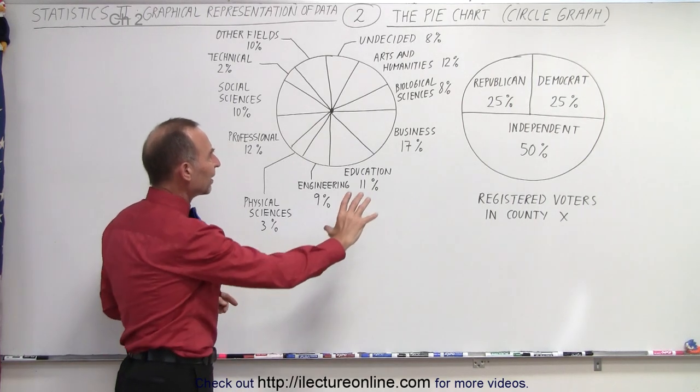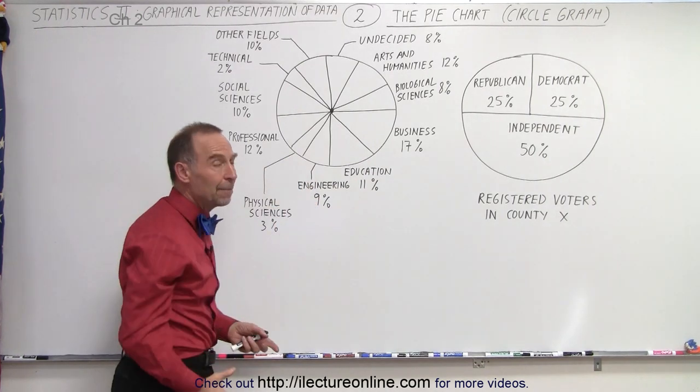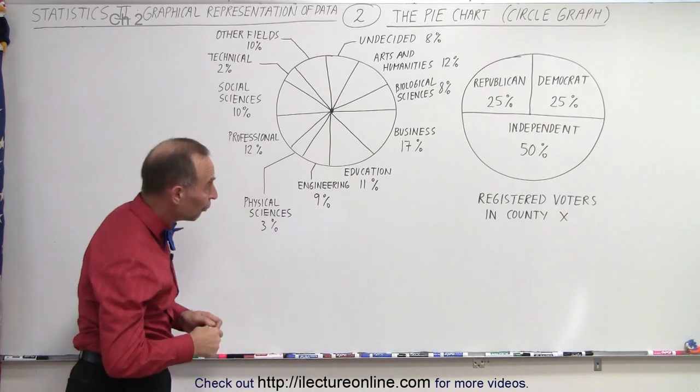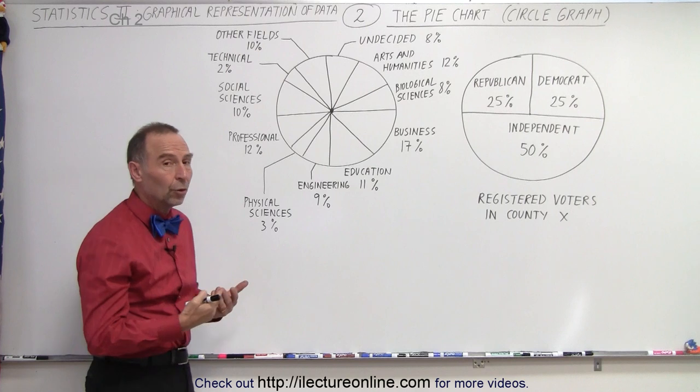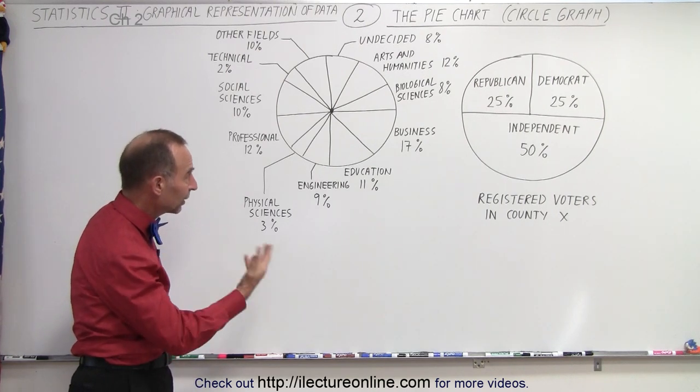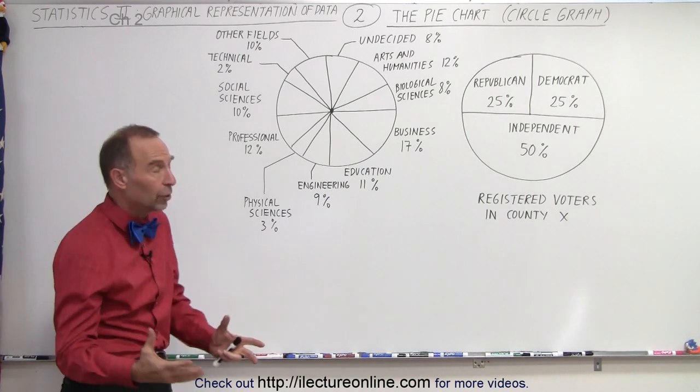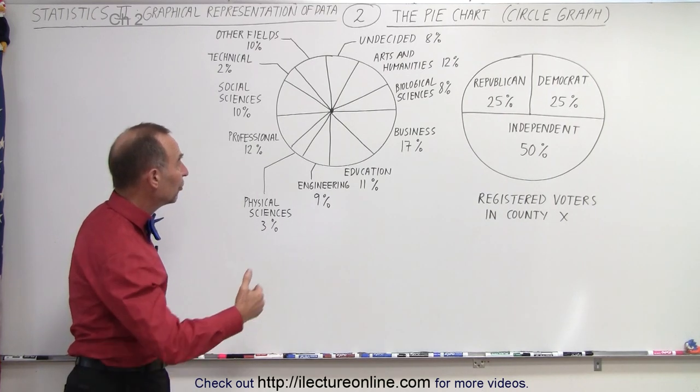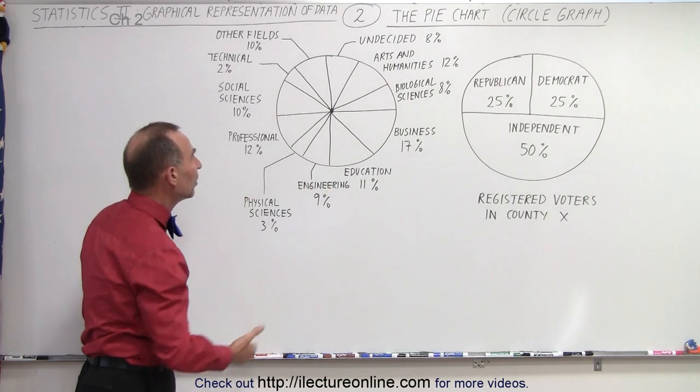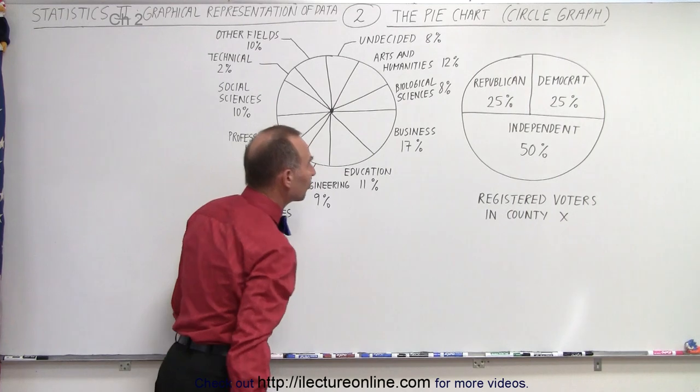But it becomes less effective when the data types become large. For example, here may be a survey that was done to find out what the students would like to graduate as, or with what kind of degree they would like to graduate with, or perhaps it's the totality of all the students in the college. And so, as a percentage, you can see that more want to graduate with a business degree and less with a biological sciences degree.